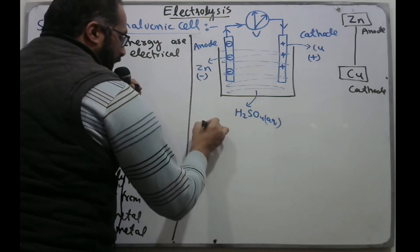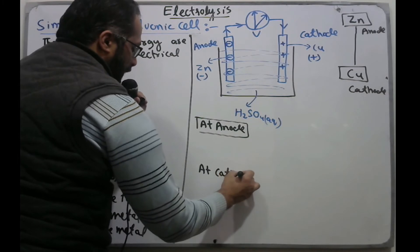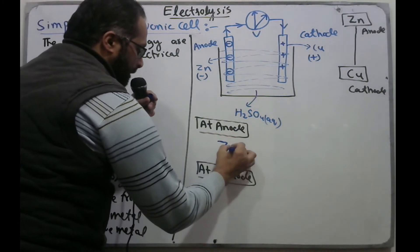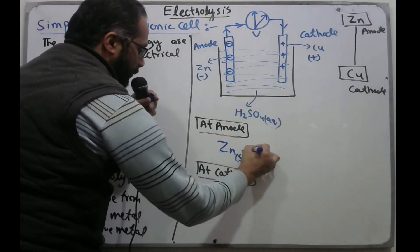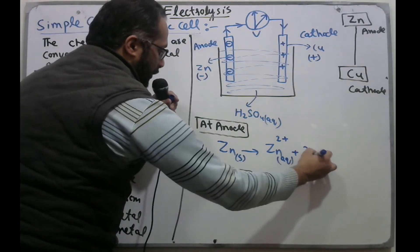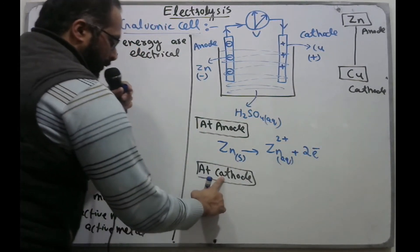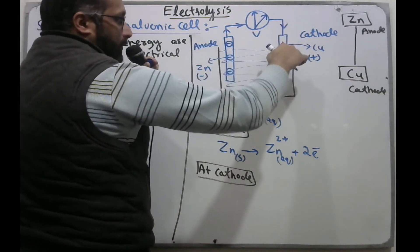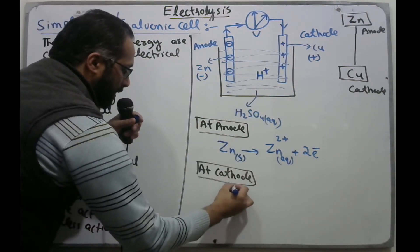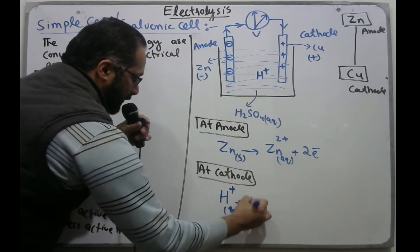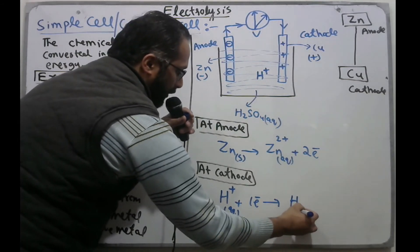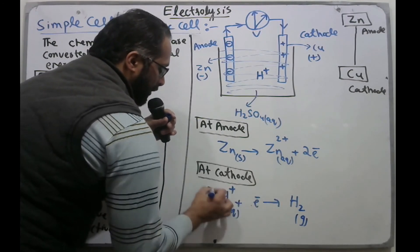During the process, reactions occur at the anode and cathode. At the anode, zinc in the solid state loses electrons to form zinc ions (Zn²⁺) in aqueous medium. At the cathode, H⁺ ions from the electrolyte gain electrons to form hydrogen atoms, which exist as H₂ gas in molecular gaseous form.